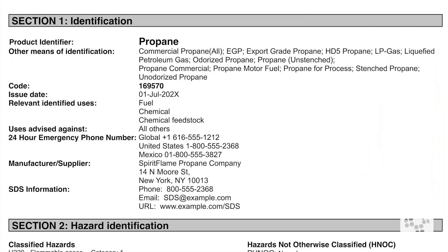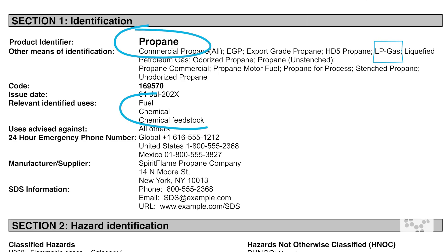Section 1: Identification. This section provides the basic details. For propane, you'd find the product name, any common synonyms like LP gas, and how it's typically used. You'll also see the manufacturer's name, contact info, and an emergency number for urgent situations.